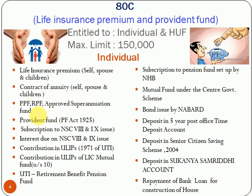Other eligible investments under Section 80C include: contract of annuity, PPF, RPF, approved superannuation fund, provident fund, subscription to NSC 8th or 9th issue, interest due on NSC 8th or 9th issue, contribution to ULIPs of LIC or other insurers, UTI retirement benefit pension fund, NHB pension funds or mutual fund under the central government scheme, bonds issued by NABARD, and deposits in Sukanya Samriddhi account. If the individual made these investments, he can claim the deduction under Section 80C.